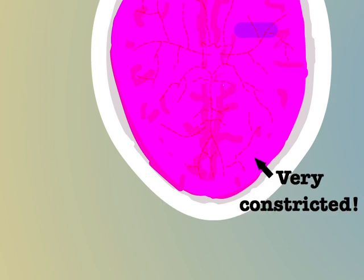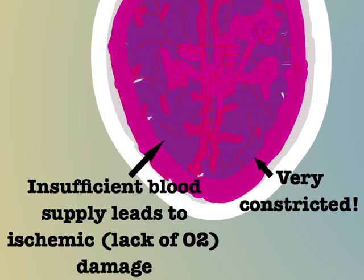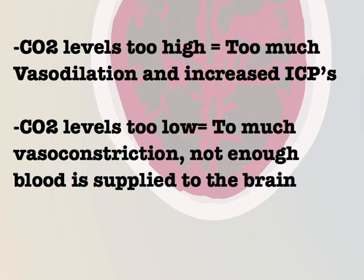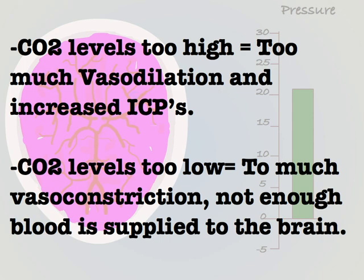Over-constricting blood vessels is also hazardous. If we reduce CO2 levels too much then the blood vessels may become too constricted to supply adequate quantities of oxygen and nutrients to the brain, leading to damage. It is of course no good reducing pressures in the brain just to damage it by another means. A balance must be struck between reducing the volume of blood in the brain and allowing a healthy level of circulation to occur.